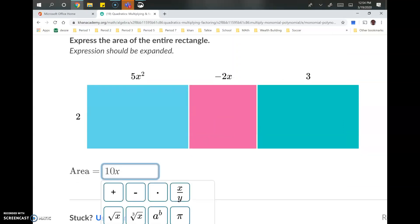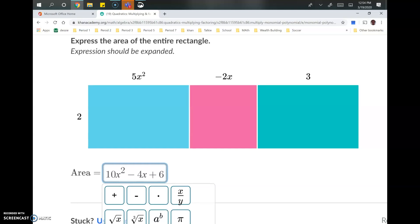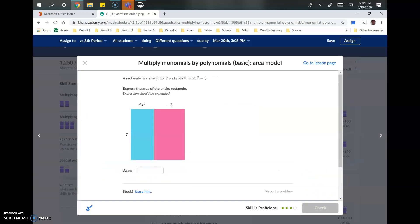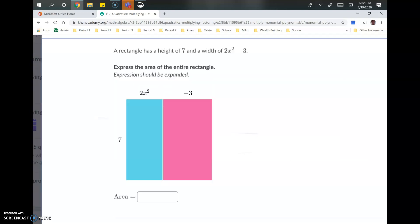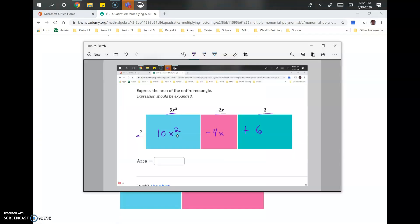So we've got 10X squared here. Minus 4X plus 6. Boom, done. And last one. This is a binomial. So we've got 2 things times 1 thing. So we've got a binomial times a monomial here.